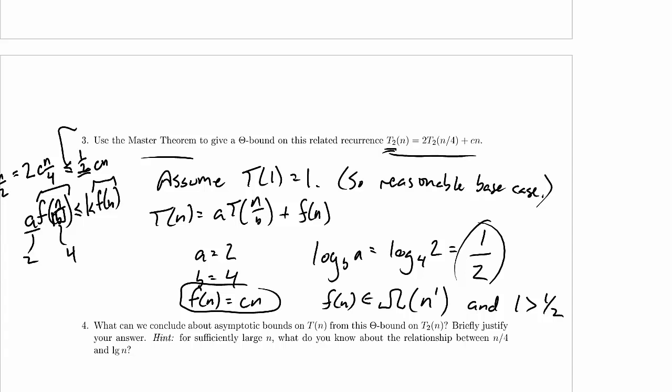So we're fine applying the Master Theorem. I hope we would be since it says use the Master Theorem, and we just need a theta bound now. Is this the leaf case, the root case, or the balance case? It's clearly not the balance case, and it turns out it is the root case, so we're going to be in theta of f(n), which is theta of n, and that's our answer.